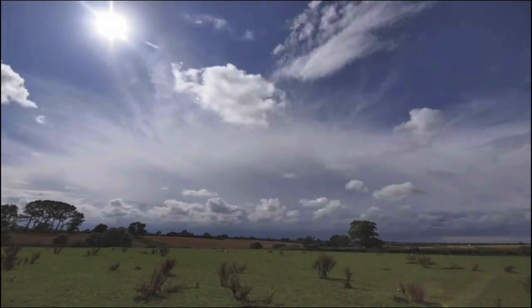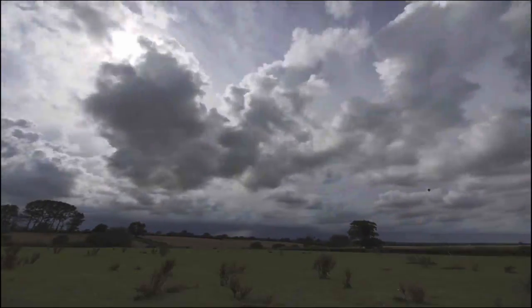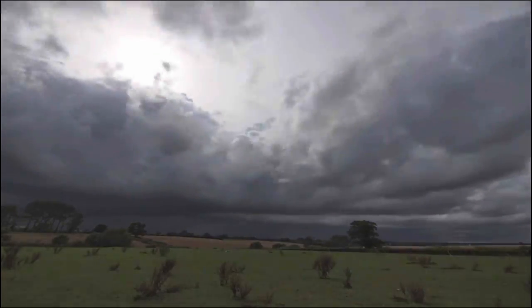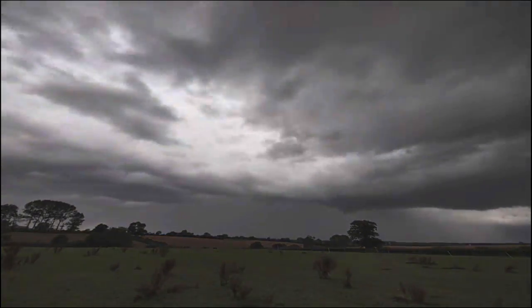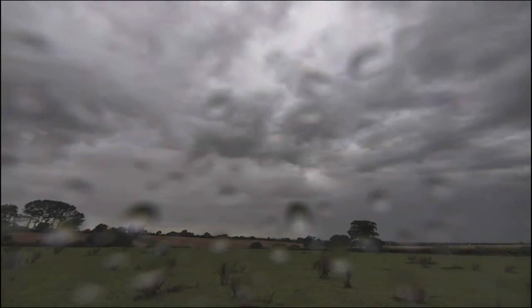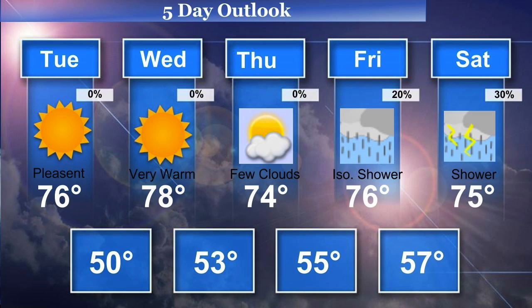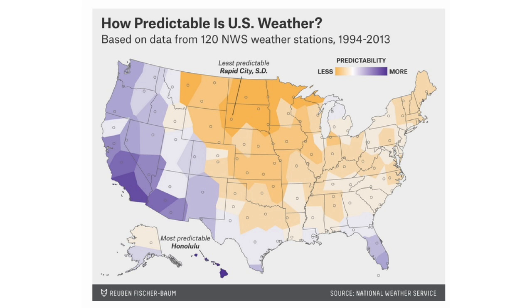Approximate solutions to equations and the growth of errors means it's nearly impossible to accurately predict the weather after several days. You can check this yourself by looking at the predicted highs and lows in your area for one week later and compare it to what actually happens. Other factors, like geography, can magnify this instability.